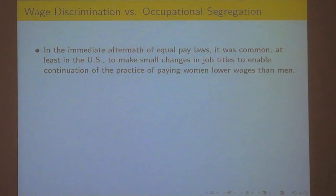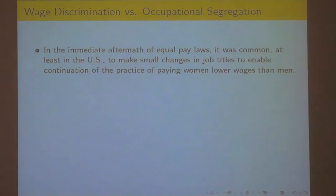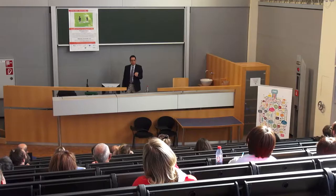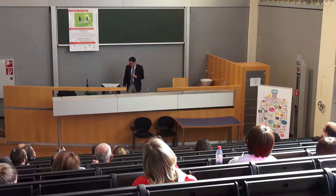After equal pay laws, in the immediate aftermath, what you would find employers doing — and there's evidence in the U.S. — is they would play games with job titles. You might have a type of job like 'accountant,' and suddenly there are two types: accounting A and accounting B. They basically do the same thing, but A pays more. Men would be assigned to accounting A and women to accounting B, so it would appear there's no pure wage discrimination, even though the distinctions are just marginal.